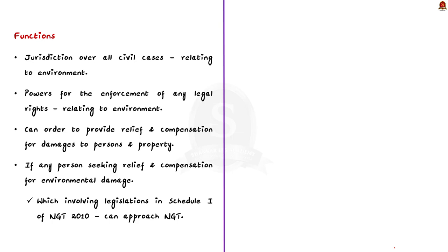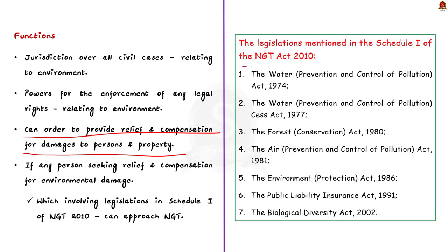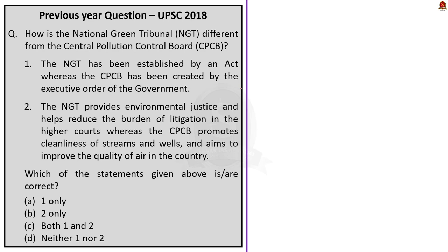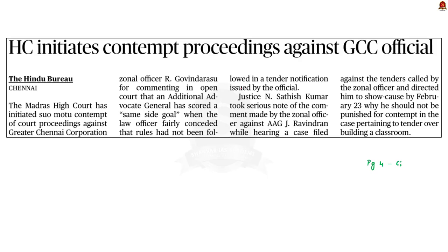The NGT has jurisdiction over all civil cases involving a substantial question related to the environment. It is vested with powers for the enforcement of legal rights relating to the environment and can order parties to provide relief and compensation for damages to persons and property. A person seeking relief for environmental damage involving subjects under Schedule 1 of the NGT Act 2010 may approach the NGT. The legislations mentioned in Schedule 1 are displayed here for reference.